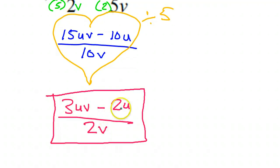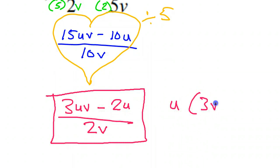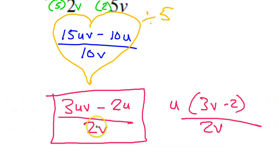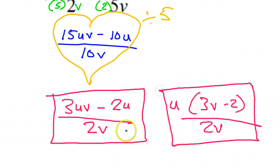Notice the numerator has a GCF of u, so I could pull that off to the side leaving u times (3v minus 2) over 2v. But there's nothing to cancel or anything, so it's really equivalent to what we had before. Either one of these is acceptable, but the first one that we had was just fine.